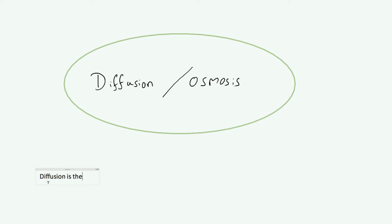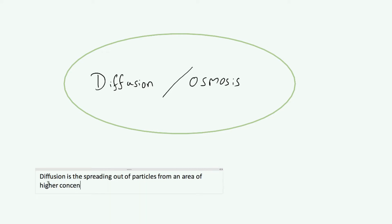So diffusion is the spreading out of particles — and particles is obviously a general term, you could be talking about molecules, atoms, ions, whatever it's going to be — from an area of higher concentration to an area of lower concentration.